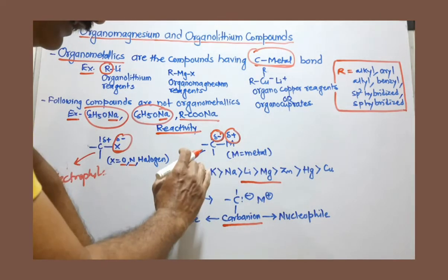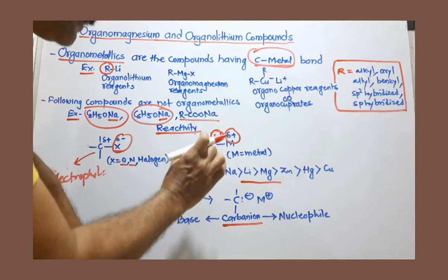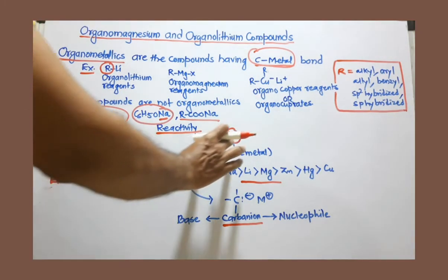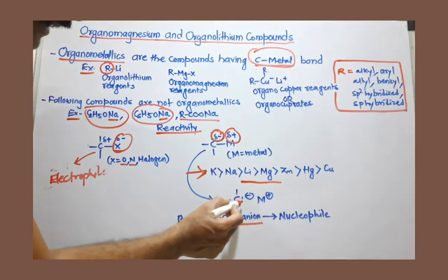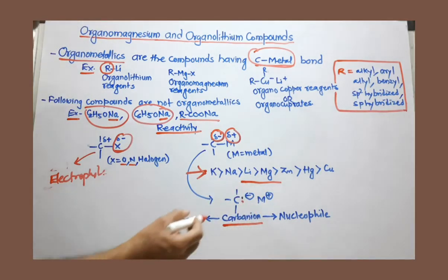And you can see here, if electronegativity, electropositivity is more, the metal is more electropositive, this bond becomes ionic. And you can see here the nature of ionic bond. Here, carbon having a pair of electron.